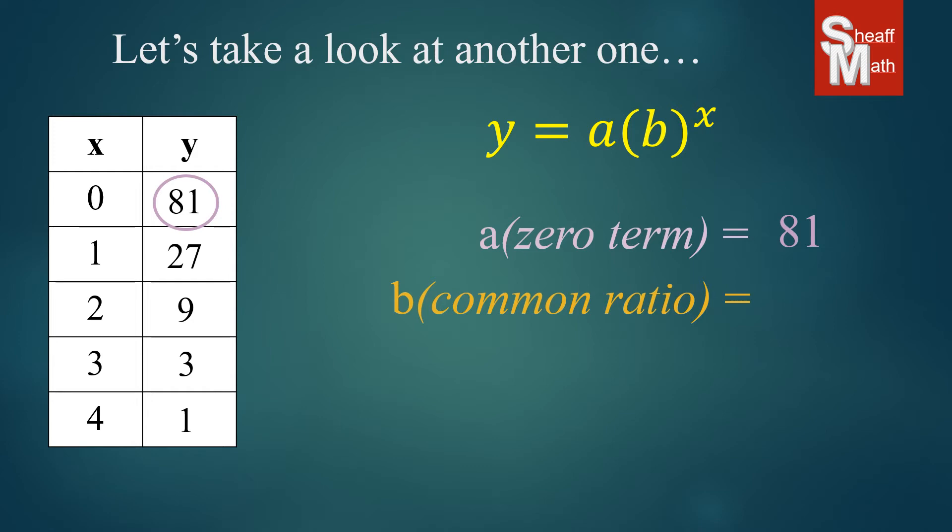We are going to find the ratio the exact same way that we found it in the other ones. So the first pair, 27 divided by 81, or 27 over 81, simplifies to 1 third. And 9 over 27 also simplifies to 1 third. And all of these do.